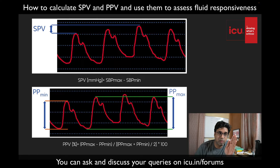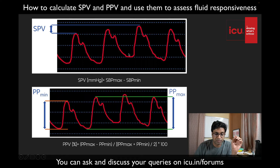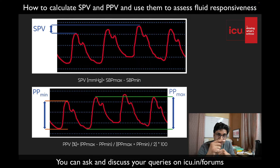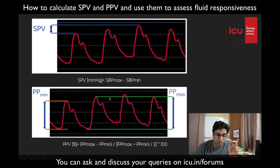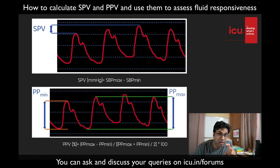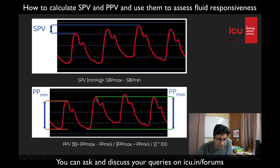So 20 mmHg is the variation in systolic pressure. For pulse pressure variation, pulse pressure means the difference between systolic and diastolic within a single cycle. You find where the pulse pressure is highest — that is, the cycle with the greatest systolic-diastolic difference — and where it is lowest. The variation between these gives the pulse pressure variation.